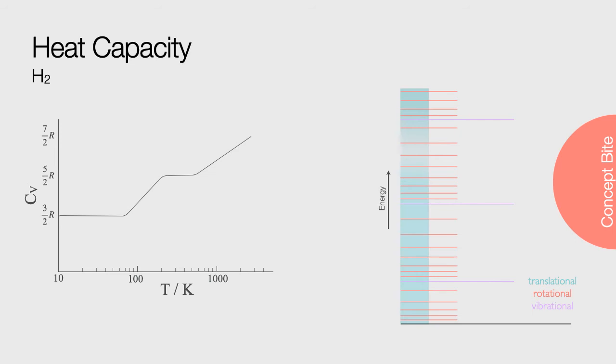As we increase the temperature, we can see that there is a steady rise as the rotational energy levels are being occupied, and eventually, at around 200 Kelvin, the heat capacity levels off again, as the rotational energy levels become more uniformly populated.